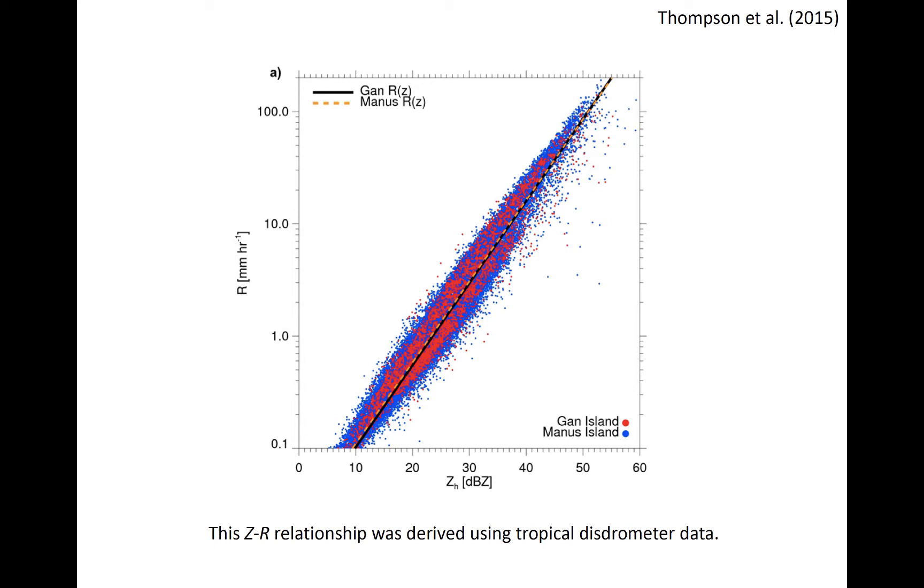From the drop size distribution, both the liquid water volume and the equivalent radar reflectivity factor can be determined. The red and blue dots on this plot represent data from two tropical islands, and they generally agree pretty well.